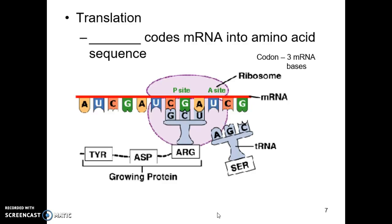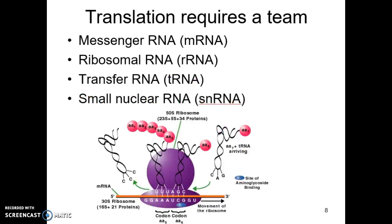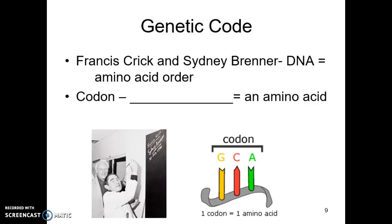Again, translation is when the ribosome codes the messenger RNA into the amino acid sequence. To translate, that ribosome requires a big team of helpers — it has messenger RNA, ribosomal RNA, transfer RNA, small nuclear RNA, all these different players, and these are all enzymes. All these different structures are involved helping the ribosome. There's the big purple ribosome that reads the code, and all these other little RNAs help it, working together as a team to ensure the code is translated correctly. In our next lecture, we'll look at the genetic code and what Francis Crick and Sidney Brenner discovered about DNA and the amino acid order.